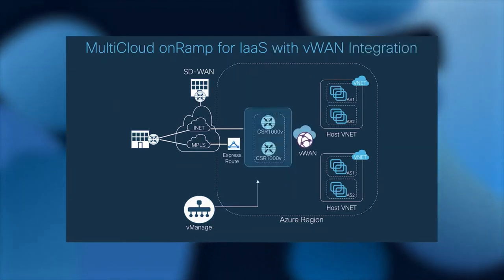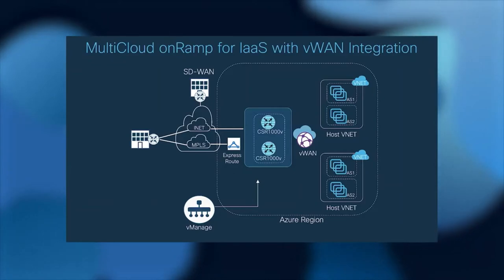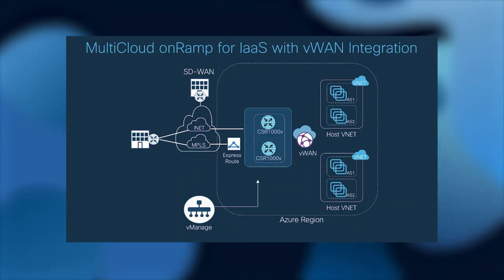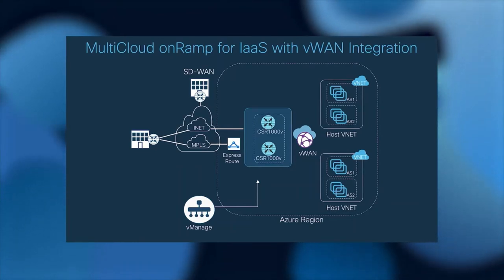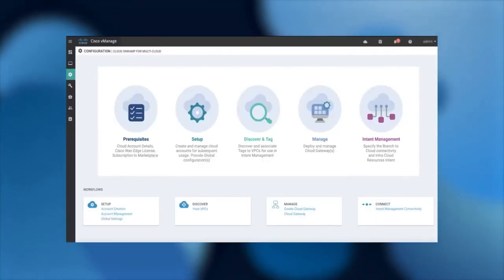The new Cloud on-Ramp for IOS V-WAN integration dramatically simplifies the network design, introducing two CSRs in the middle connecting directly to V-WAN and providing connectivity between the SD-WAN network on the left side and host VNets cloud infrastructure on the right side. This is how the whole workflow looks in VManage.